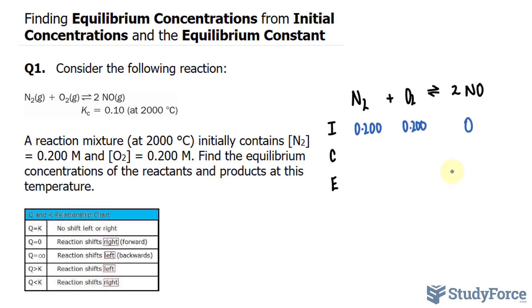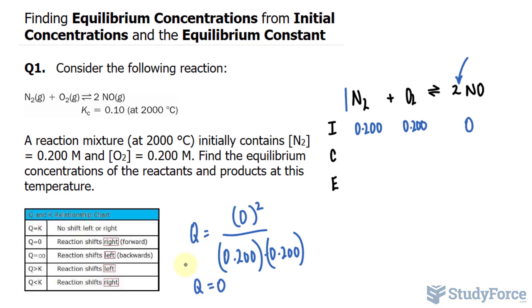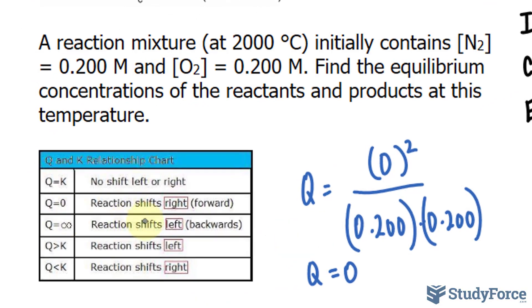In step number two, we want to use the initial concentrations to calculate the reaction quotient Q for the initial concentrations, and then we'll compare what we get for Q to K and predict the direction in which the reaction will proceed. So the reaction quotient is equal to the concentration of the products. We have two molecules of NO and we have a concentration of zero. Zero raised to the power of two divided by 0.200 times 0.200. The numerator is zero, therefore our reaction quotient is zero. According to this table, when the reaction quotient is zero, it shifts to the right.